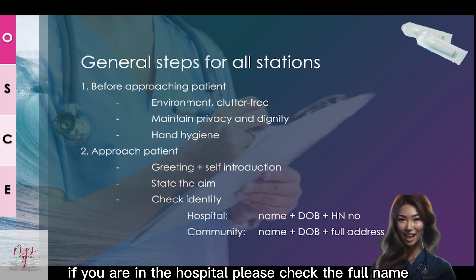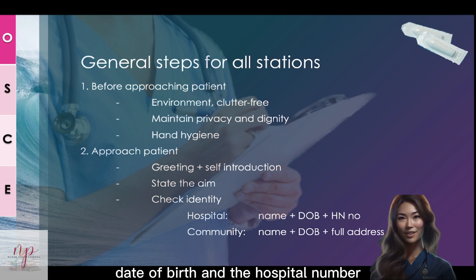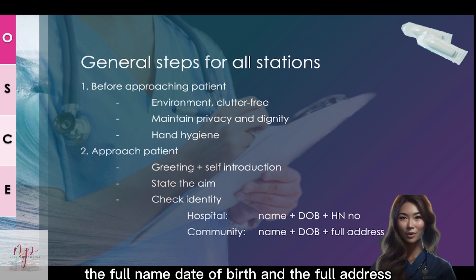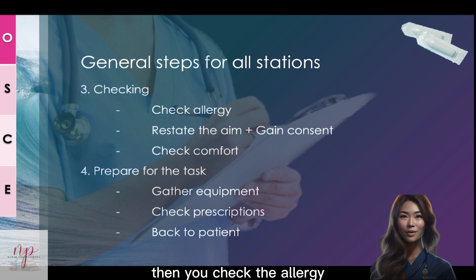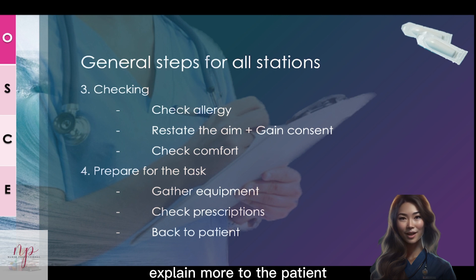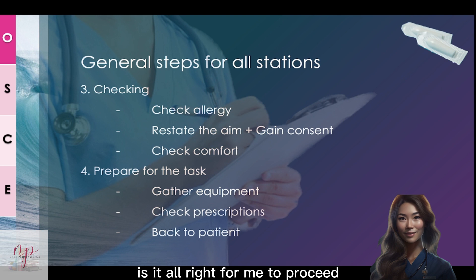If you are in the hospital, please check the full name, date of birth, and the hospital number. If you are in the community, please check the full name, date of birth, and the full address. Then you check the allergy, and then you restate the aim — give more details and explain more to the patient. You also need to gain consent: 'Is it alright for me to proceed?' or 'Are you happy for me to proceed?'